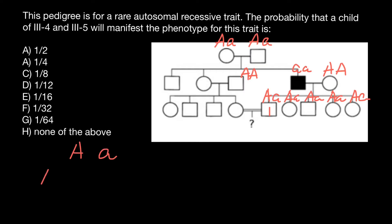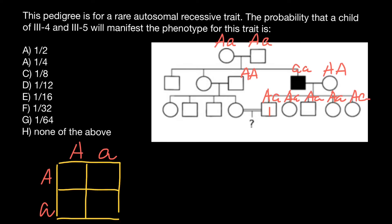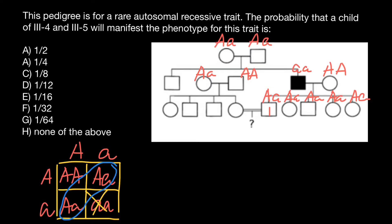We know that the mother's parents are heterozygous, so we can build a simple Punnett square. The outcomes are: AA, Aa, Aa, and aa. We know that this female is not homozygous recessive — or she would be affected — so we can exclude that variant. Now we have to find the probability of this female being heterozygous: it's 2 out of 3, not 4, because we excluded the aa variant.